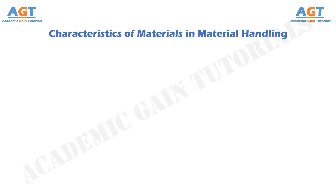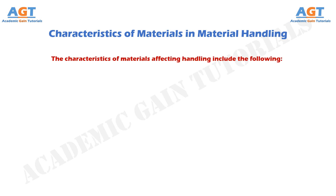Characteristics of materials. The characteristics of materials affecting handling include the following. Size is the material characteristic which includes width, depth, and height of the material, which affects material handling.